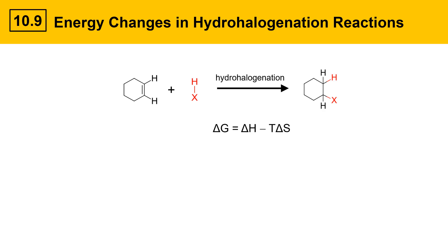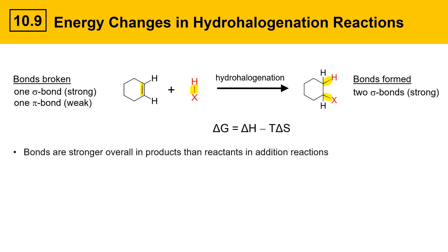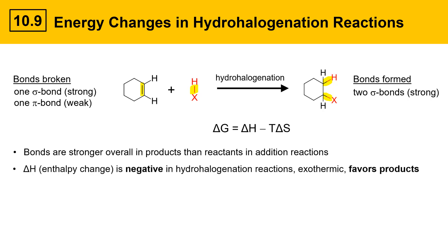First, we'll take an inventory of the bonds that are broken and formed. The bonds broken in this reaction — highlighted here in yellow — are one sigma bond, which is a stronger type bond, and one pi bond, which is weaker. The bonds that are formed are two sigma bonds, which are both strong. Overall, the bonds are stronger in the products than in the reactants in addition reactions. That makes delta H, enthalpy change, negative. Hydrohalogenation reactions are exothermic because the bonds formed are stronger than the bonds broken, and the difference comes out as heat.